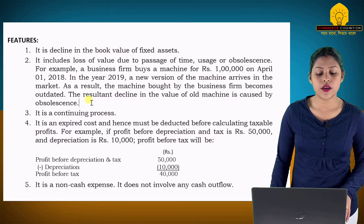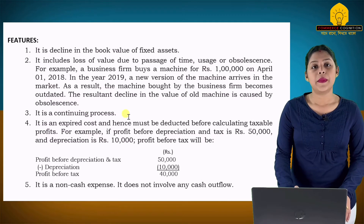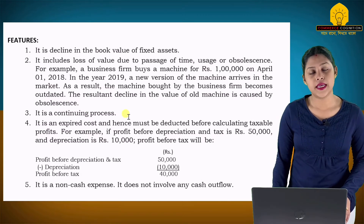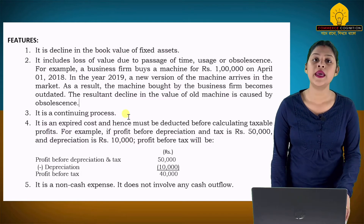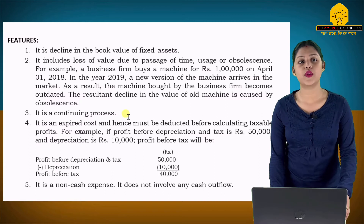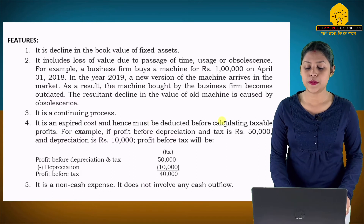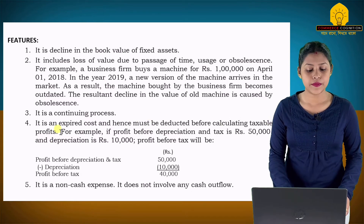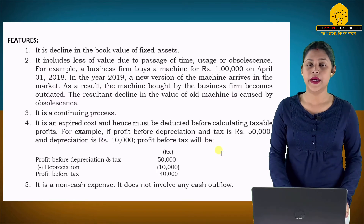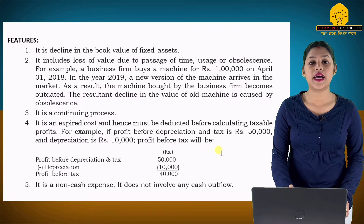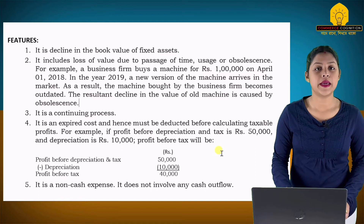Third, depreciation is a continuing process. That means when we record depreciation in the books, we have to calculate the depreciation each year and deduct it from the fixed asset value. Fourth, it is an expired cost and hence must be deducted before calculating taxable profits. That means when we calculate profit, we have to subtract the depreciation amount. For example, profit before depreciation and tax is Rs. 50,000 and depreciation is Rs. 10,000, so profit before tax is Rs. 40,000.